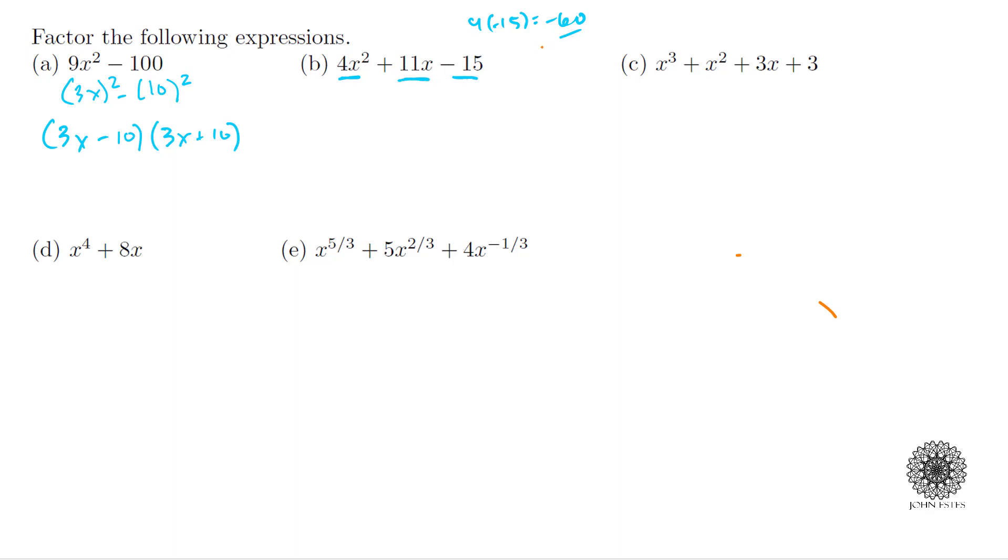We start thinking: maybe -6 and 10, those don't add to give me 11. You keep playing this game: -3 and 20, that doesn't work. After a while you may stumble upon -4 and 15, and those add to give me positive 11x. Why I like this technique is this is the only guesswork that you have.